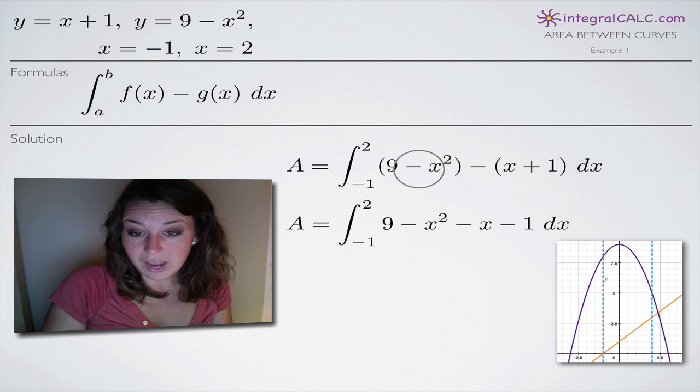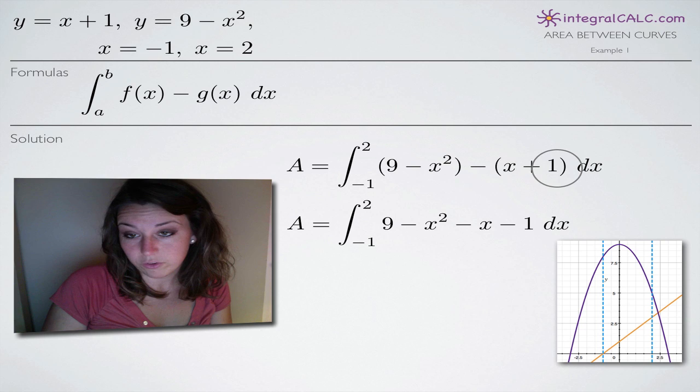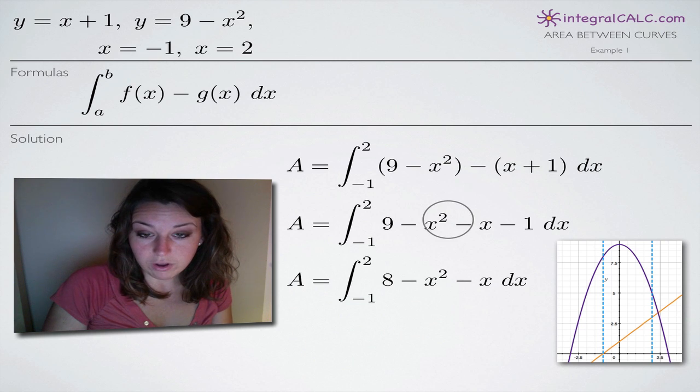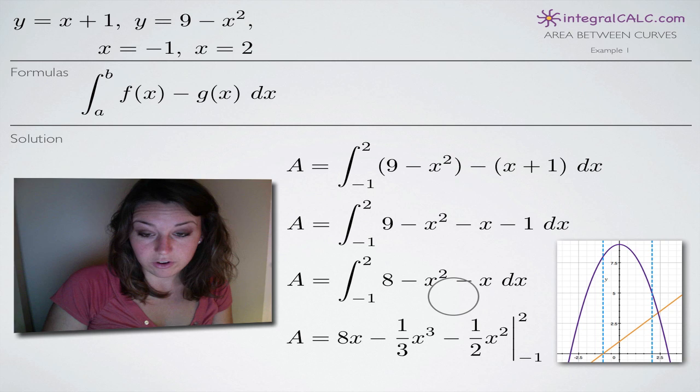We'll end up with 9 minus x squared minus x and minus 1 when this negative sign carries over to both of these terms here. When we combine constants, we'll end up with 8 minus x squared minus x, and then we can start integrating.